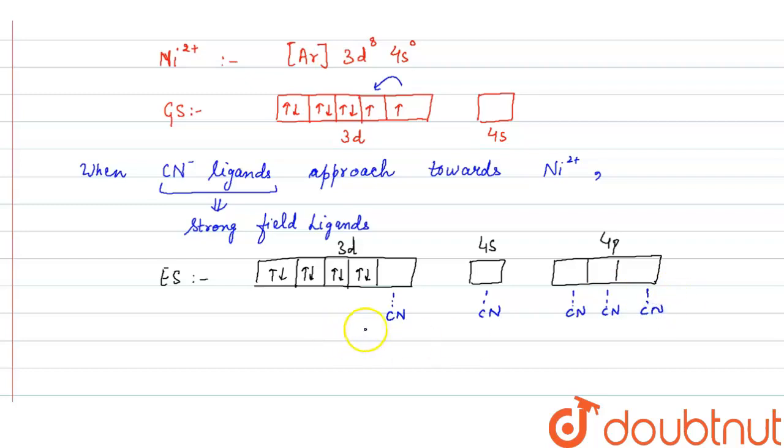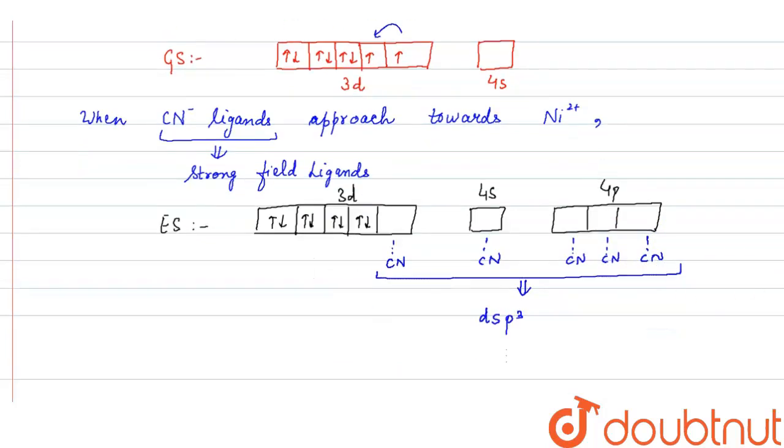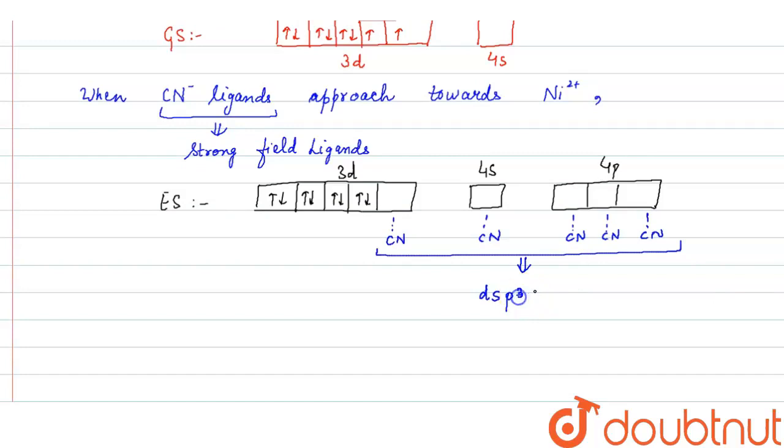So we have these 5 orbitals which get hybridized to form dsp3. So the hybridization will be dsp3 hybridization.